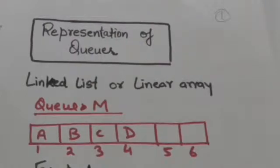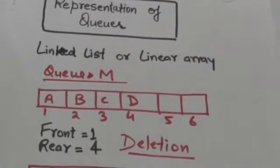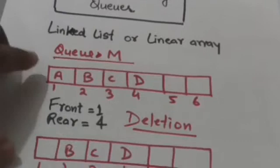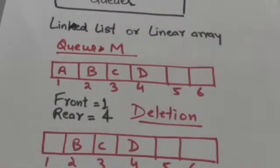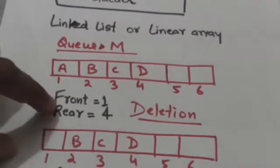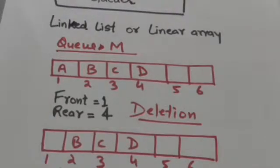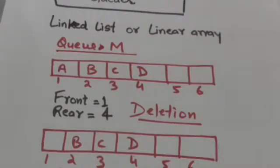Suppose there is a queue M which is represented in memory by a linear array M and two variables, front and rear. Variable front contains the index of an element of array M which is the front element of queue M, and variable rear contains the index of an element of array M which is the rear element of queue M.